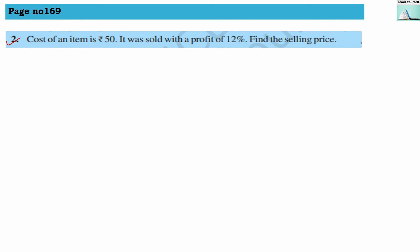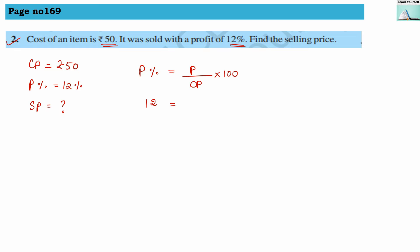Second numerical: cost of an item is rupees 50, so cost price is rupees 50. It was sold with a profit of 12%, so profit percentage is 12%. We have to find the selling price. Using the formula profit percentage equals profit divided by CP multiplied by 100: profit percentage is 12, CP is 50, multiplied by 100.